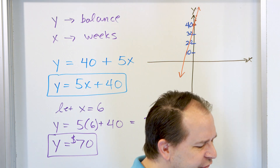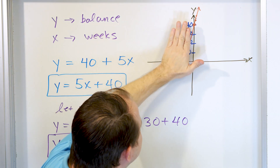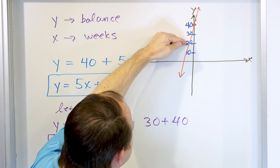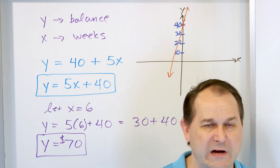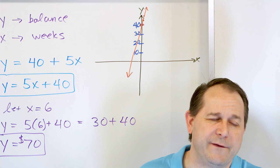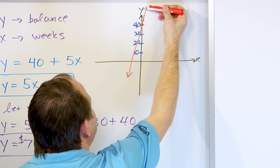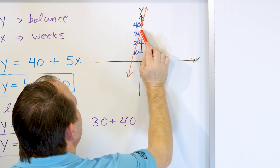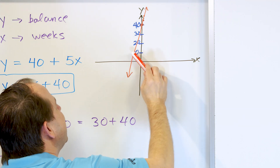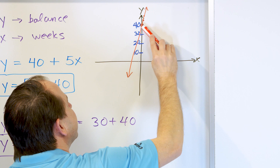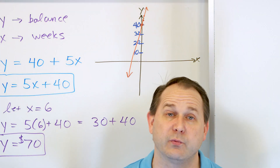The initial condition is where the graph crosses the Y-axis. If the number of weeks is zero, you haven't started saving additional money yet - you already have an initial condition of $40 in the bank. Keep that term in the back of your mind, because in physics and calculus, initial conditions are huge - you have to know the initial conditions to solve most problems. As time goes on, you save more and more money, and we can ignore the left-hand side since that's negative time.